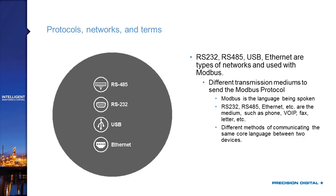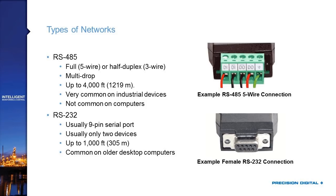RS-485 is the most common network type on serial Modbus devices. It comes in 5-wire and 3-wire options — you can wire a 5-wire device to a 3-wire device, but you need to know which you're dealing with in advance. RS-485 is a multi-drop network, meaning you can have multiple devices wired in parallel across the same lines. It can travel quite far — up to 4,000 feet for most applications.